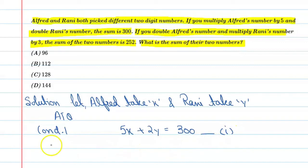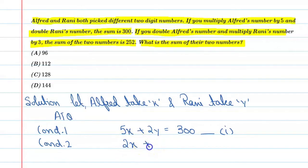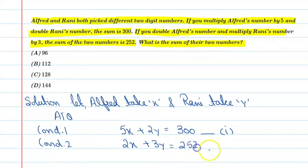The second condition is: double Alfred's number and multiply Rani's number by 3. The sum that comes is 252. So we get 2x + 3y = 252. Mark this as equation number 2.